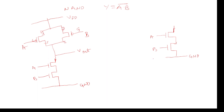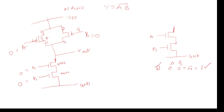Now I will check one condition. When A=0 and B=0, A·B whole bar equals 0 bar, which equals 1 — we need to get output 1. This is the first condition. When A=0 and B=0, both pull-down transistors are NMOS and both pull-up transistors T1 and T2 are PMOS, which are complementary to each other.